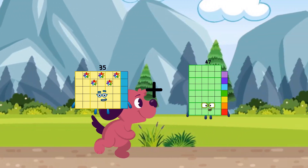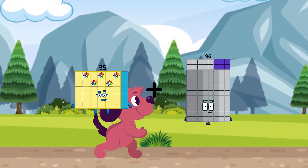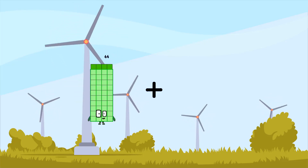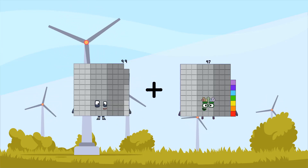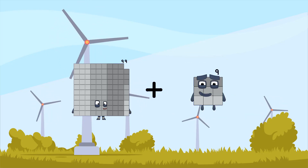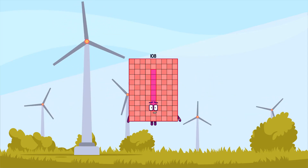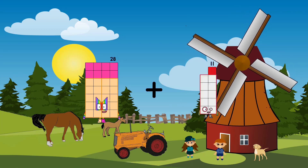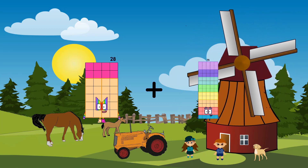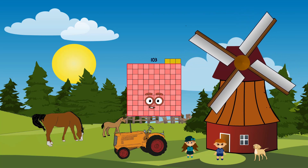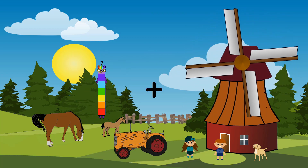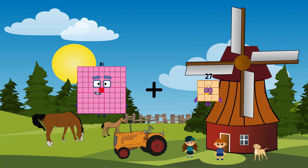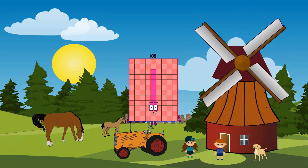35 plus 96 equals 131. 99 plus 9 equals 108. 28 plus 75 equals 103. 81 plus 27 equals 108.